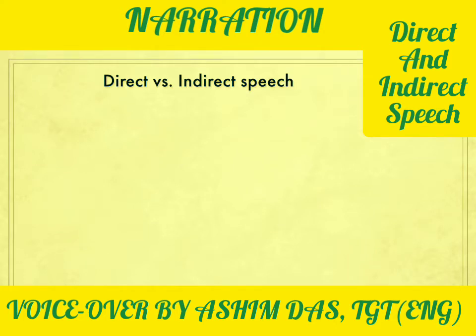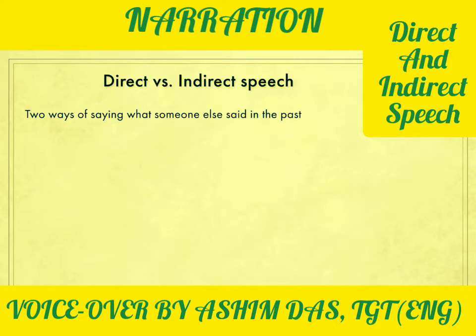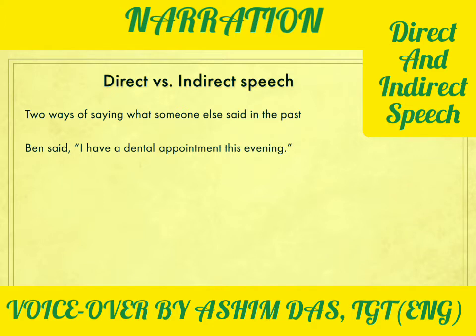Hello everyone. Today let's learn about direct and indirect speech. There are two ways of saying what someone else said in the past. For example, last weekend some friends and I were planning to go see a movie but one friend Ben could not join us. Ben said, 'I have a dental appointment this evening,' meaning he had to go to the dentist so he couldn't come with us.